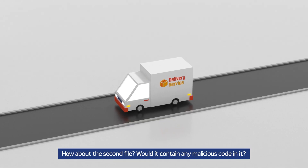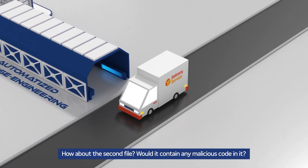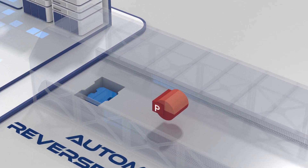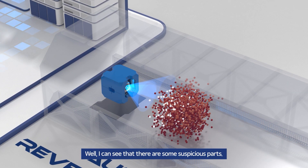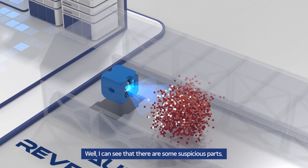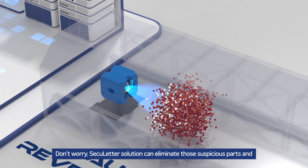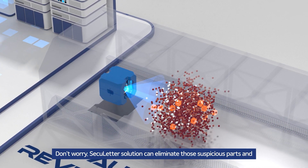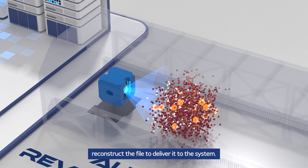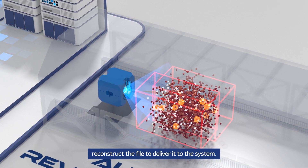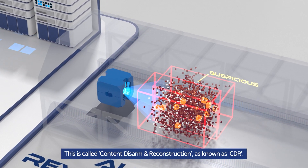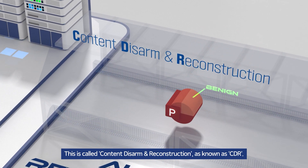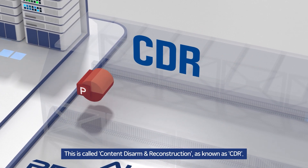How about the second file? Would it contain any malicious code in it? I can see that there are some suspicious parts. Don't worry — CQLetter solution can eliminate those suspicious parts and reconstruct the file to deliver it to the system. This is called Content Disarm and Reconstruction, also known as CDR.